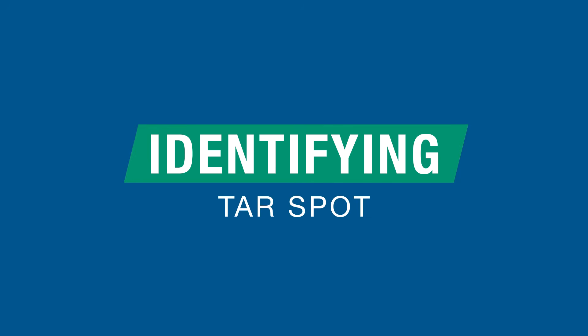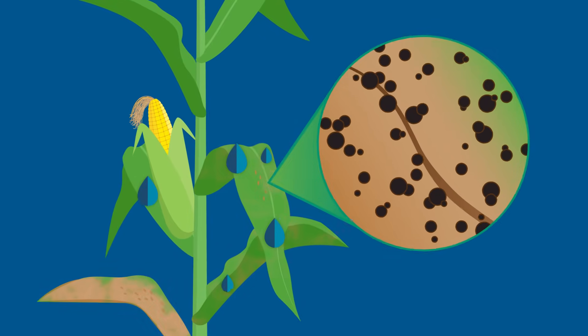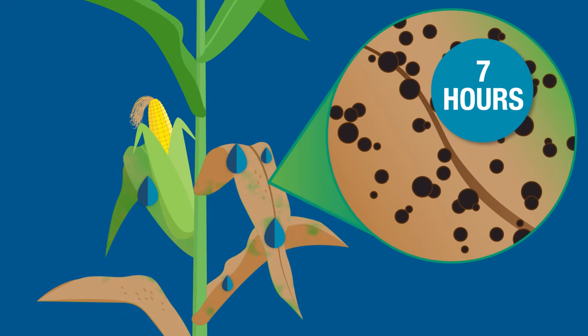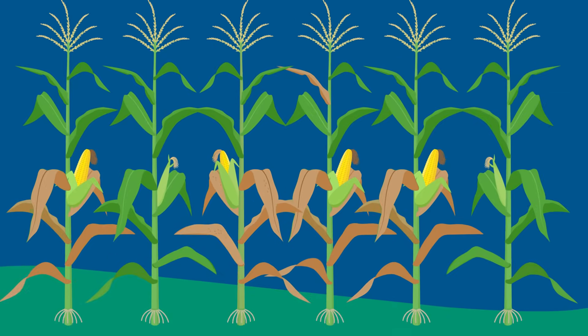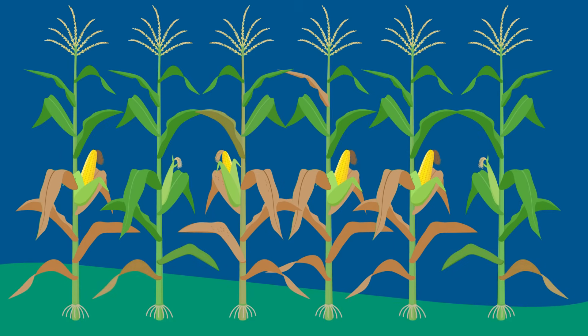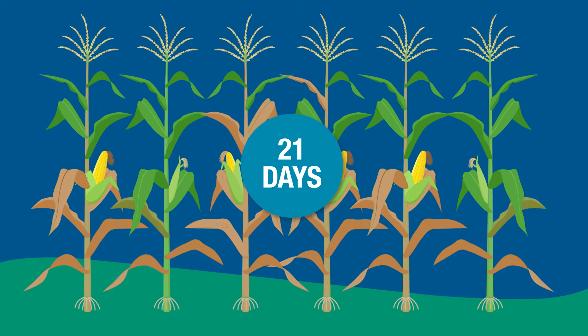Tar spot thrives in wet conditions and requires seven hours of wetness on a corn leaf to establish itself. Under favorable conditions, the disease continues to produce spores and reinfects plants in 21 days.